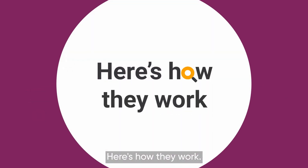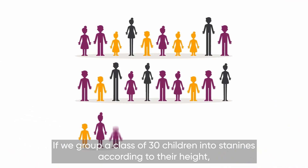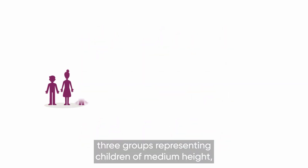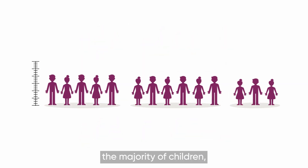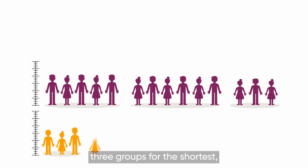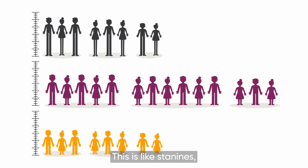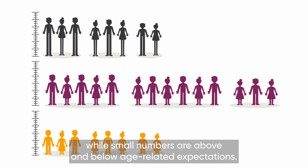Here's how they work. If we group a class of 30 children into STAN9s according to their height, we'd have three groups representing children of medium height — the majority of children — three groups for the shortest, and three groups for the tallest. This is like STAN9s, as the majority of children perform at age-related expectations, while small numbers are above and below age-related expectations.